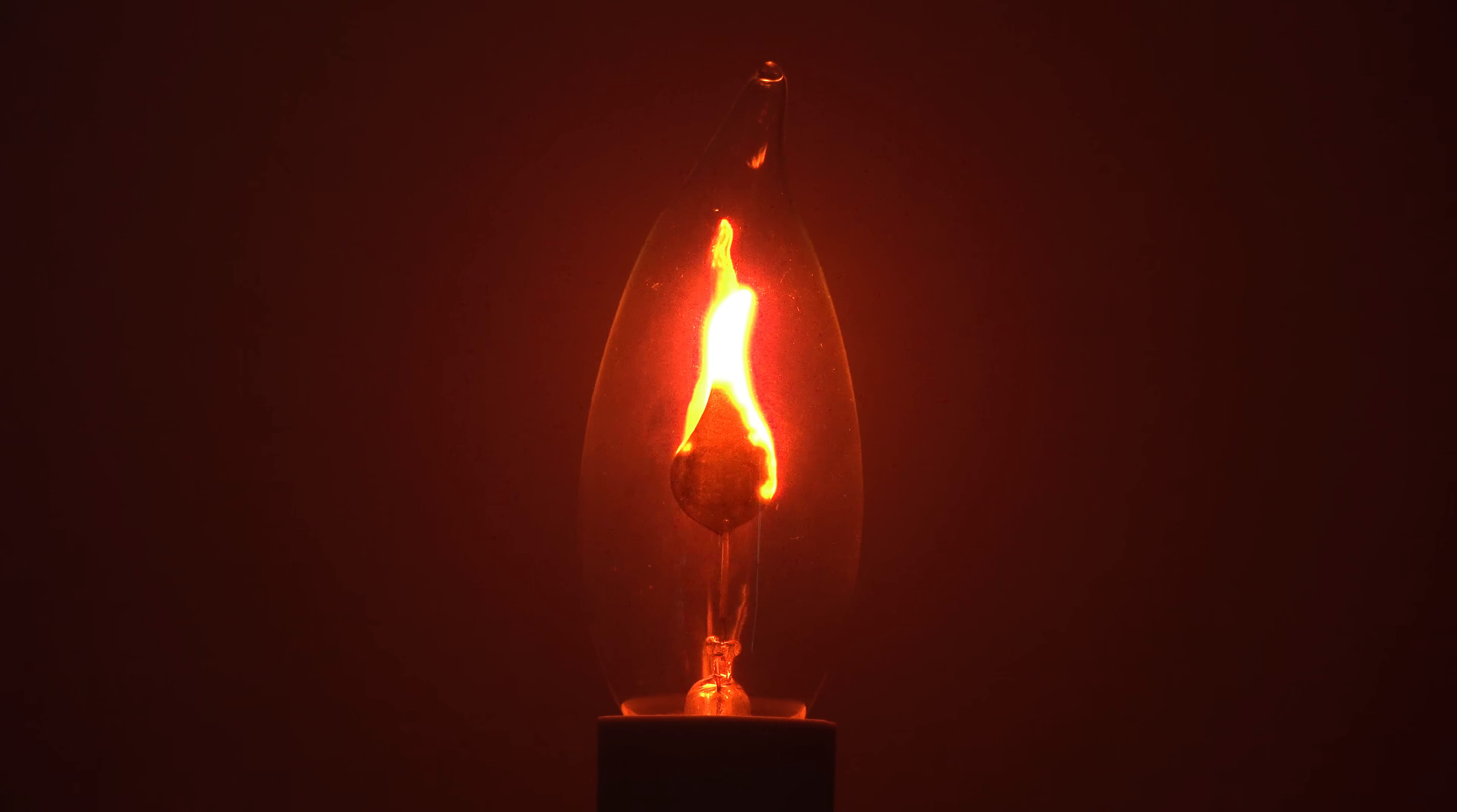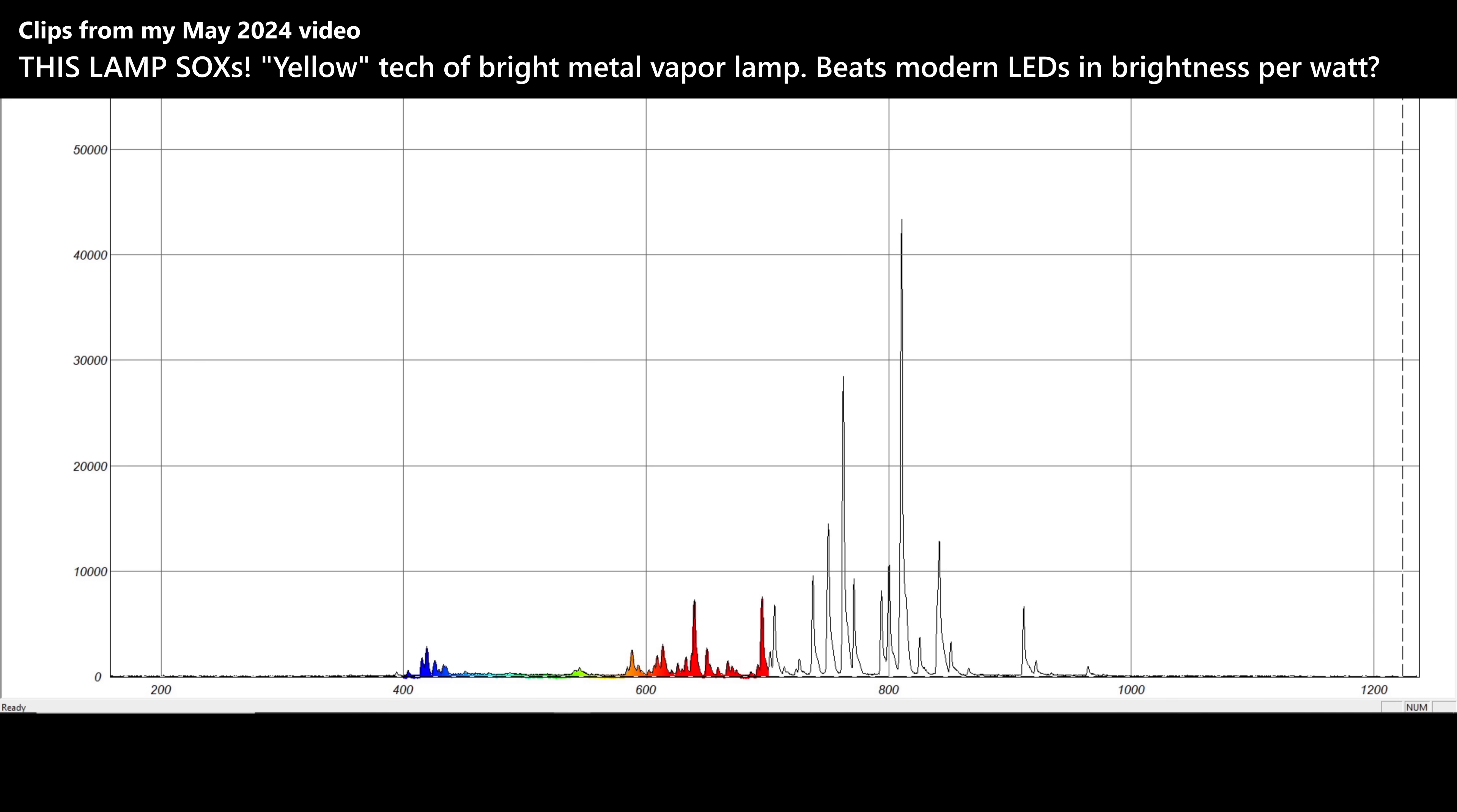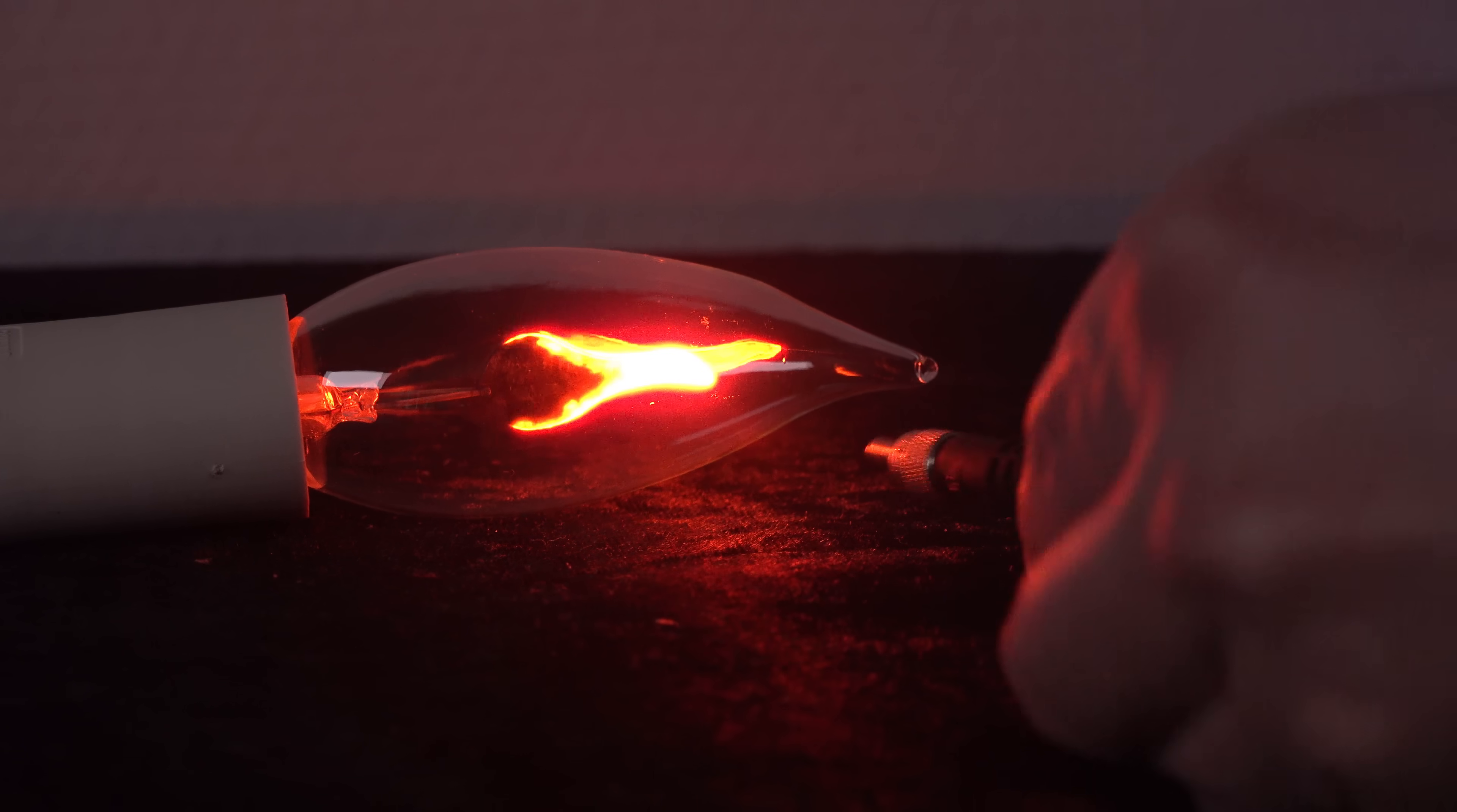I wonder what gases are emitting this lamp's color. Luckily I have a spectrometer that can tell us by showing the spectral lines of the light, the fingerprints of the gases inside, so to speak. To get as steady a reading as possible I will point the probe at the solid part of the glow on the tip.